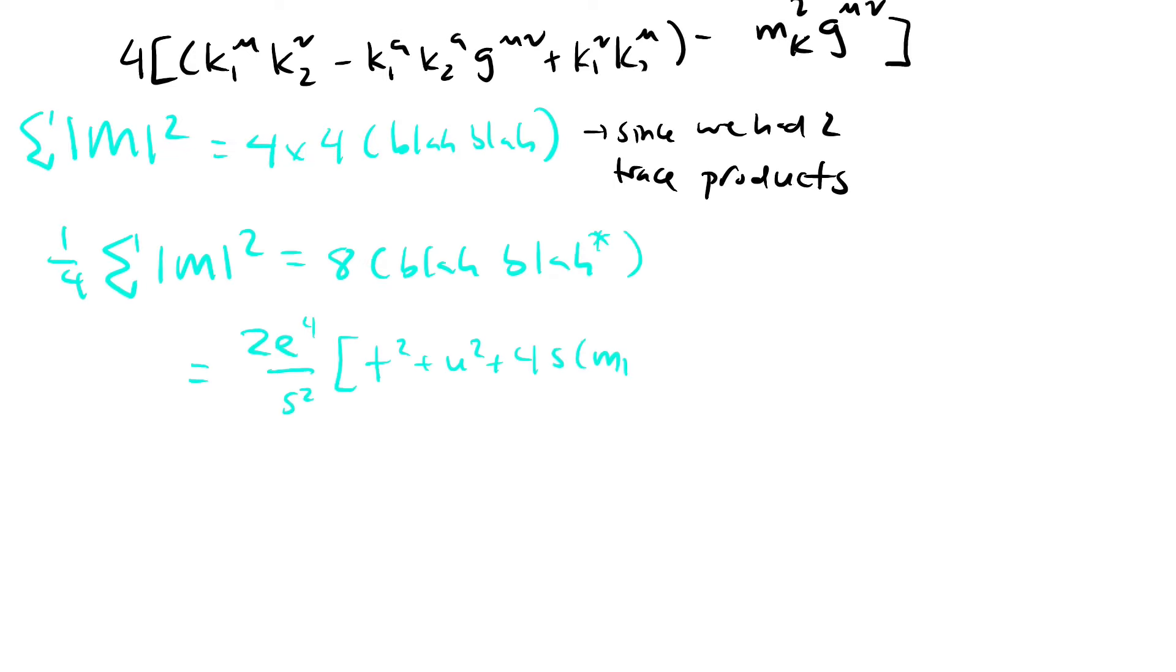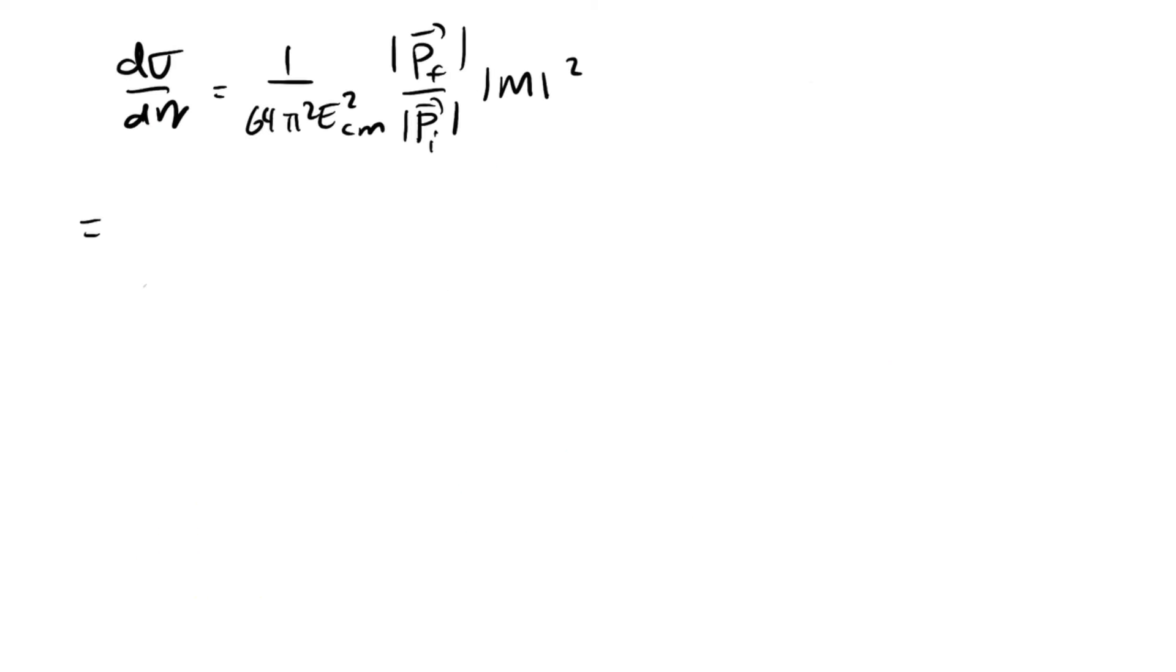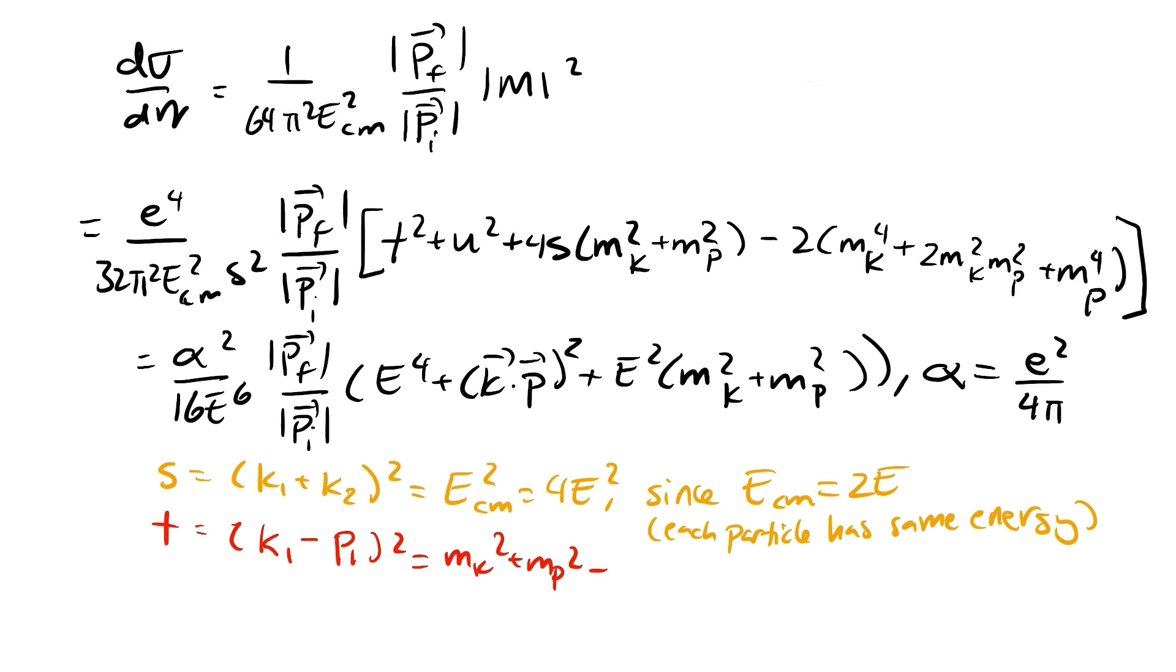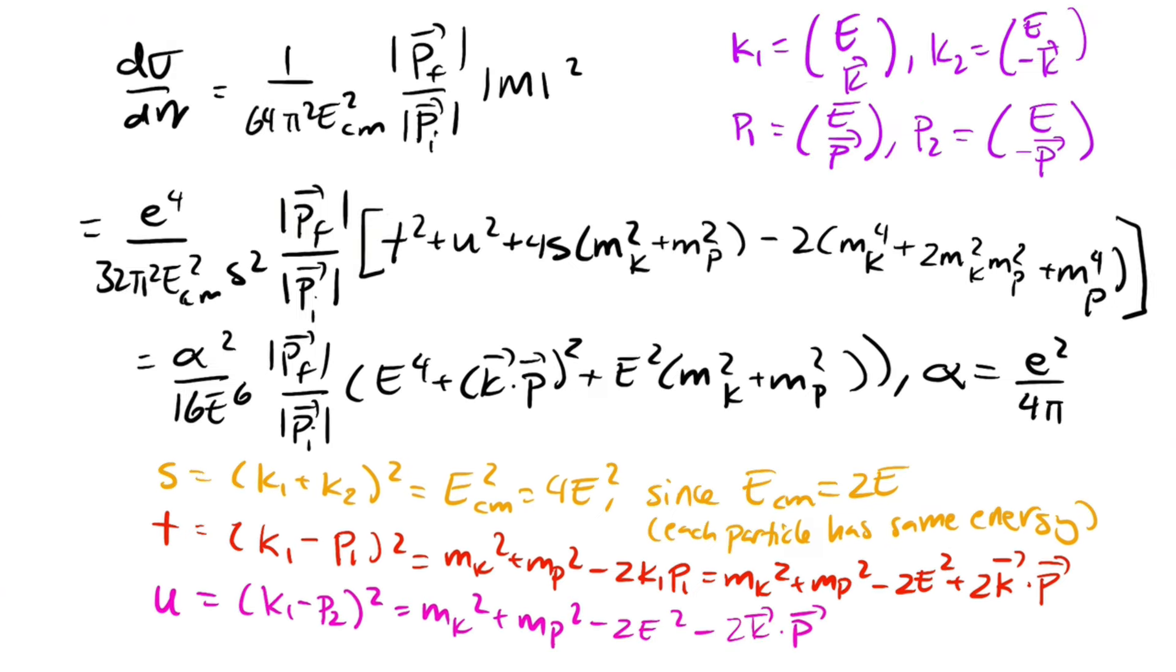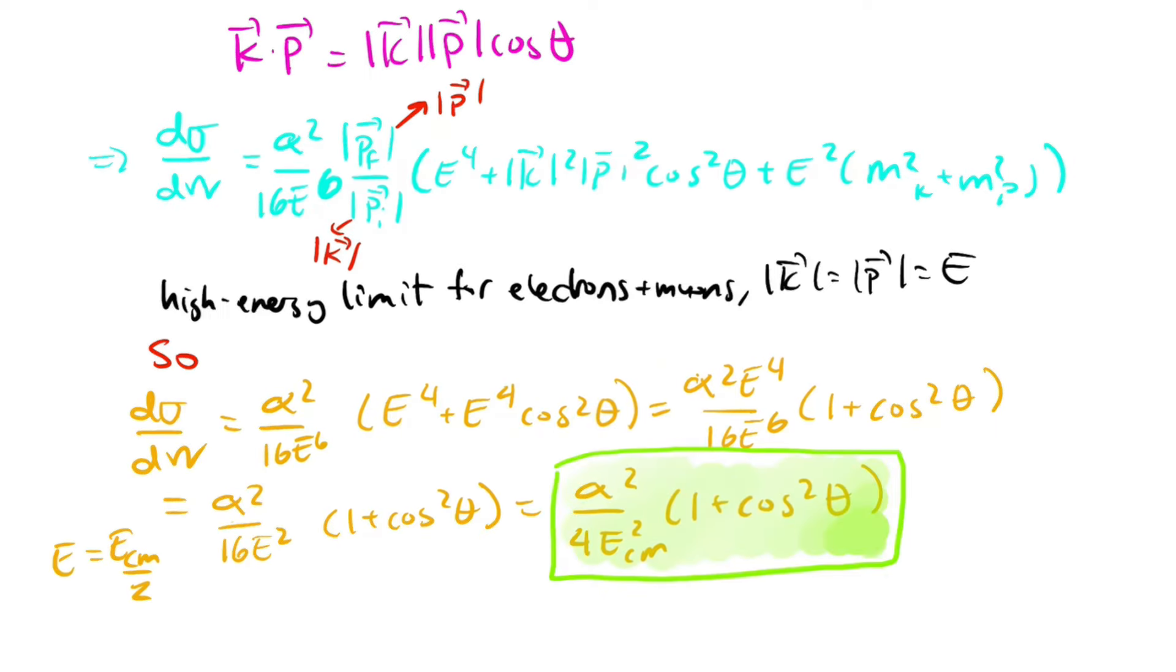We can express the matrix element in terms of the s, t, and u channels. Why we're doing this will make sense later. We can calculate the differential cross-section for this process. I'm going to quote the formula for the differential cross-section for this kind of process here. To derive this, you'd have to solve the two-body Lorentz invariant phase space formula, which can be found in any good QFT book. Plugging our values for the Mandelstam variables gives this formula for the differential cross-section. Doing some more algebra gives us this formula for the differential cross-section for muon-proton scattering. We can now integrate this over solid angle to get the total cross-section.